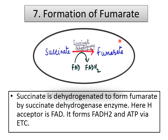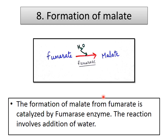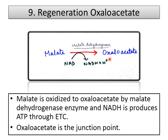Formation of fumarate: succinate is converted to fumarate in the presence of enzyme succinate dehydrogenase. FAD accepts hydrogen from succinate to form fumarate and FADH2. This FADH2 enters the electron transport chain and via oxidative phosphorylation produces 1.5 ATP (previously 2 ATP). Then fumarate is converted to malate by hydration in the presence of water and the enzyme fumarase. Finally, malate is converted to oxaloacetate by malate dehydrogenase, converting NAD+ to NADH, which enters the electron transport chain producing ATP.